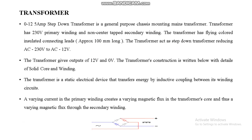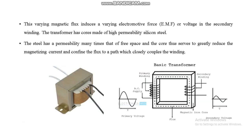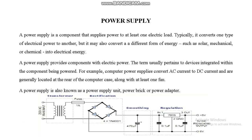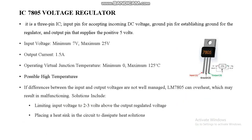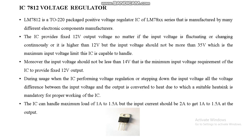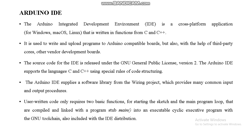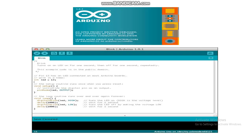This is the transformer we are using — a step-down AC transformer from high voltage to 12 volts. This is the power supply unit with a bridge rectifier that converts AC to DC current. IC7805 and IC7812 voltage regulators provide 5 volts and 12 volts respectively. We have developed our proposed system using Arduino IDE, which is open source.